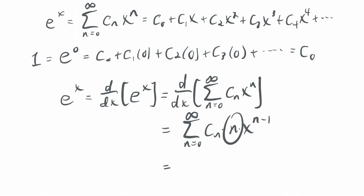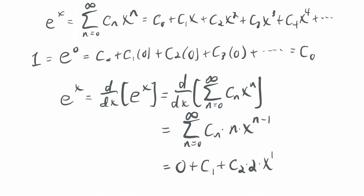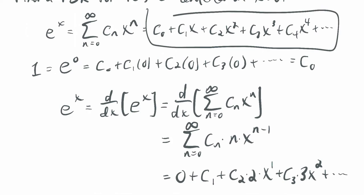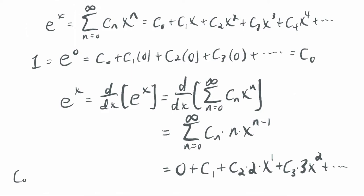When n is 0, we get 0. When n is 1, we get c1 times 1 times x to the 0, which is c1. Plus c2 times 2 times x to the 1st, plus c3 times 3 times x squared, plus c4 times 4 times x cubed, and so forth. This all equals the original series: c0 plus c1 x plus c2 x squared plus c3 x cubed plus c4 x to the 4th, and so on.